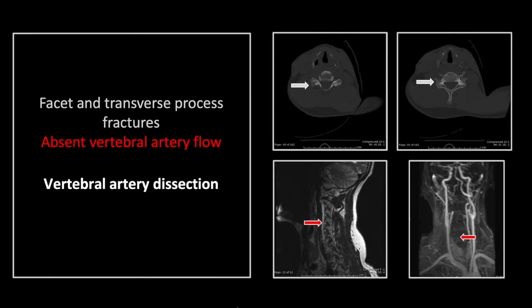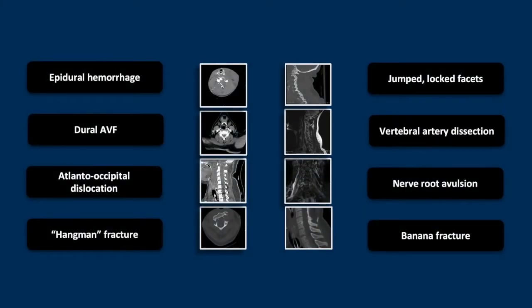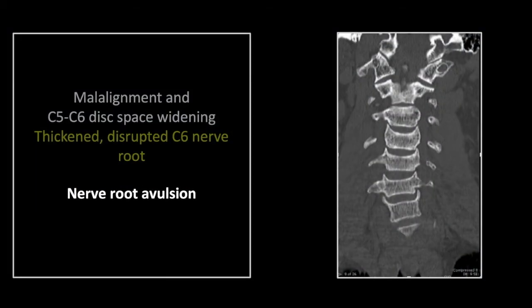That is a case of transverse process fracture with associated vertebral artery dissection. Our next case is a relatively unusual injury that frequently results from falling onto the tip of the shoulder with the head splayed away from it. This is common in motorcycle wrecks.